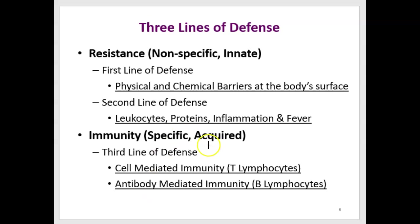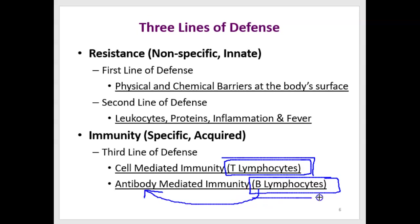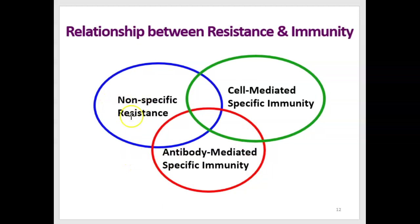In immunity — the third line of defense — we have two branches that can be used simultaneously. One branch involves lymphocytes called T-lymphocytes, and another involves B-lymphocytes, which are the ones that make antibodies. We refer to these two branches as cell-mediated immunity, involving T-lymphocytes, and antibody-mediated immunity, involving B-lymphocytes. There are nonspecific resistance mechanisms that overlap with mechanisms used by specific immunity involving antibodies.